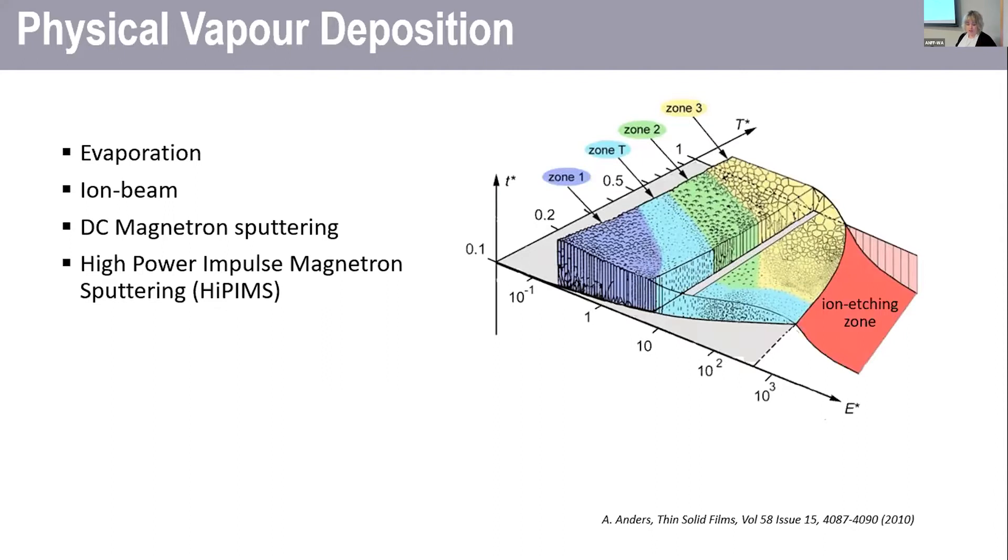A good way to illustrate this is using this diagram from Andre Anders, which looks at the factors that govern the types of films you can grow. Along the y-axis, we've got reduced temperature and along the x-axis, reduced deposition energy and then film thickness for the z-axis.